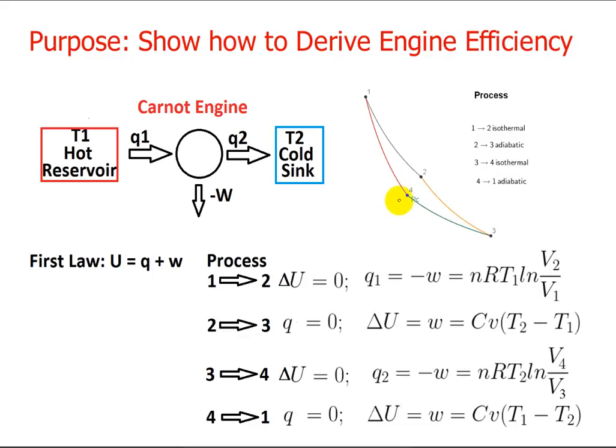The pressure volume graph of the cycle has four states and four paths. Paths 1 and 3 are isothermal, and paths 2 and 4 are adiabatic. At the end of the derivation, the equation for the efficiency has only the two temperatures T1 and T2.